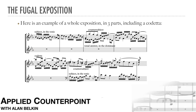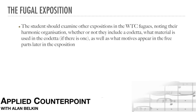Note that when the third entry arrives, the first part becomes free, but given the busyness of the subject and countersubject in the other two parts, it's limited to a fairly simple neutral line. Students should examine other expositions in the Well-Tempered Clavier fugues, noting their harmonic organization, whether or not they include a codeta, what material is used in the codeta, and what motives appear in the free parts later in the exposition.